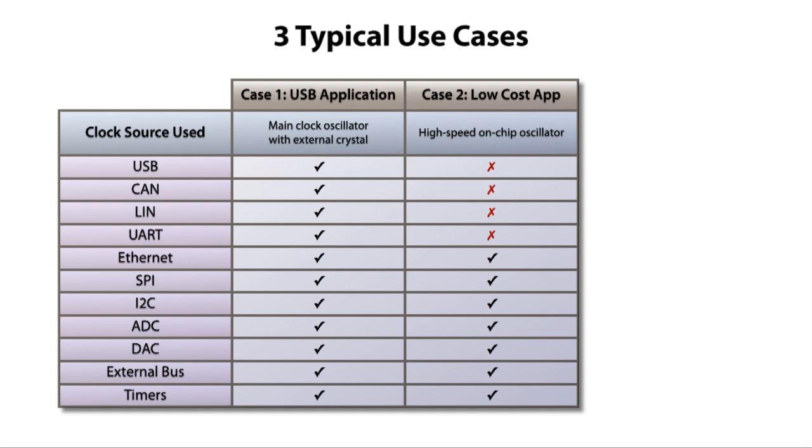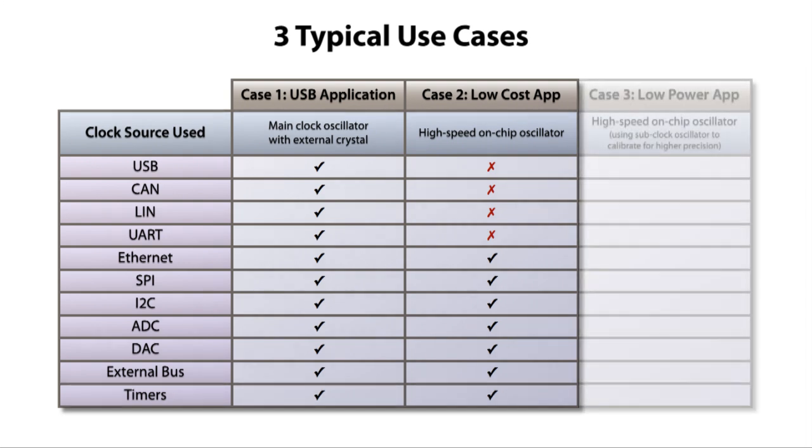In a variation of this second case, let's consider a third case, wherein the key requirement is low power, and therefore an external 32 kHz crystal is needed. In this case, the external 32 kHz crystal can be used to calibrate the high-speed on-chip oscillator, improving the precision enough to enable the use of CAN, LIN, and UART in the application.